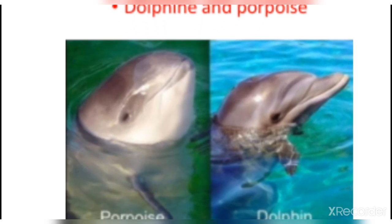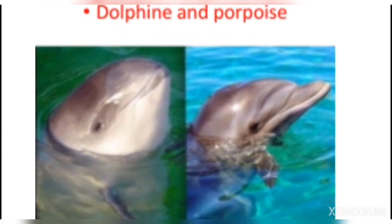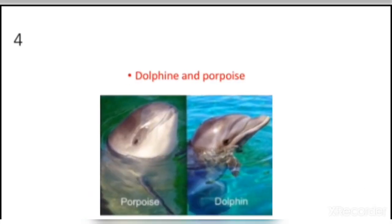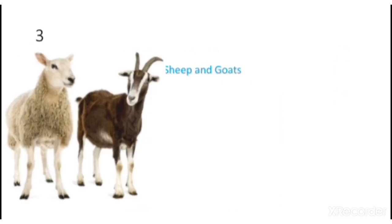Number 4: Dolphin and Porpoise. As you can see in this picture, this is a porpoise and this is a dolphin. They are aquatic animals and also very difficult to identify. In a picture you can identify them fairly easily, but in real life when you go exploring, it will be difficult to tell them apart.